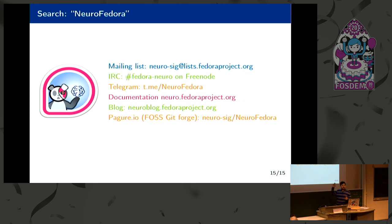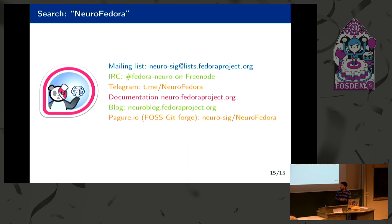You can search for us on Google. We have a mailing list, an IRC channel, and a Telegram channel. Our documentation is at neuro.fedoraproject.org, and we have a blog as well — please do have a look.